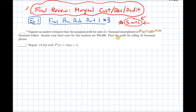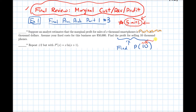Let's talk about this together. Ultimately, the question is asking us to find the profit of selling ten thousand phones, which means we need to find P(10). The units of x are already in thousands, so instead of writing ten thousand in the parentheses, we just write ten.